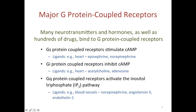There is also a third type of G-protein called the G-Q protein. These are coupled receptors that activate the inositol triphosphate, or IP3 pathway. They are found in blood vessels, as well as in the heart and many other tissues. A variety of ligands such as norepinephrine, angiotensin 2, or endothelin 1 can bind to these receptors, leading to an increase in intracellular IP3. So with G-Q proteins, in contrast to G-S and G-I proteins, the second messenger is IP3 rather than cyclic AMP.